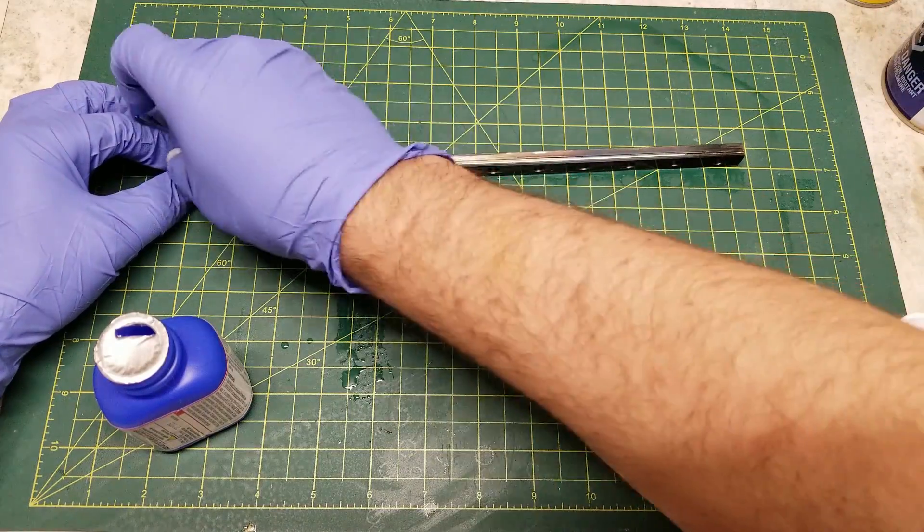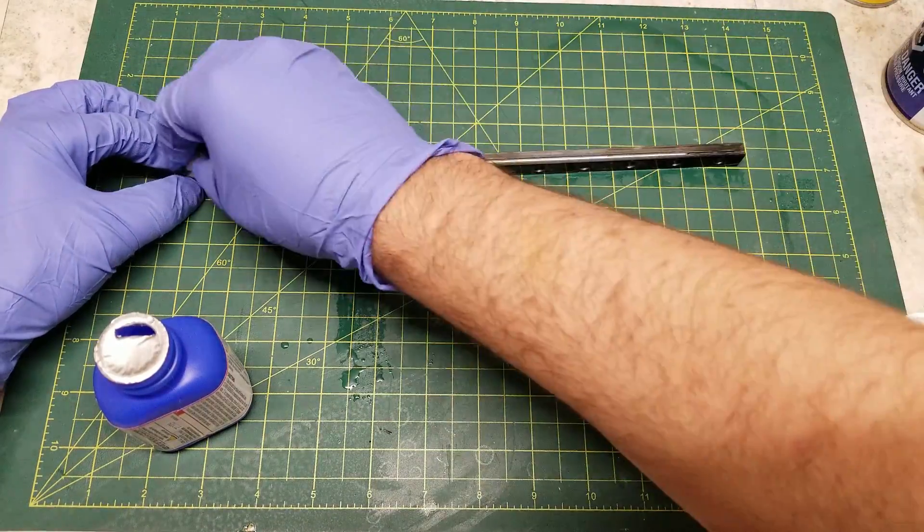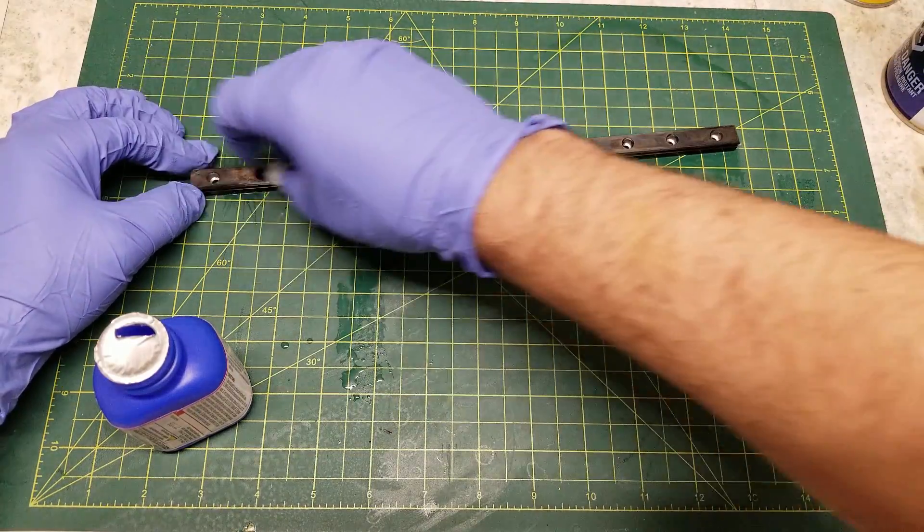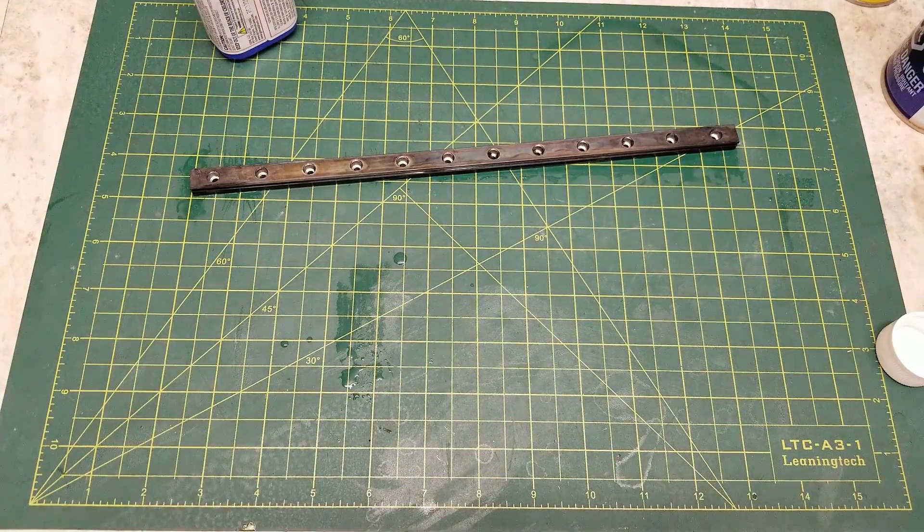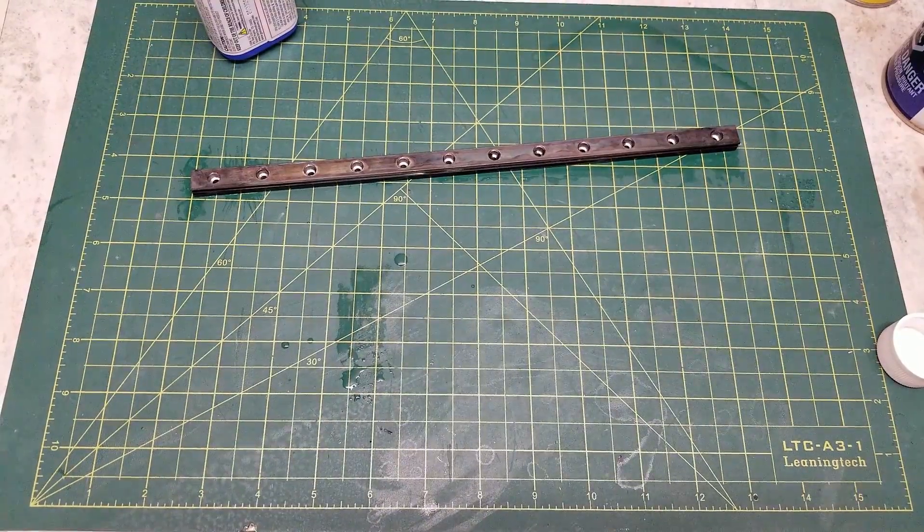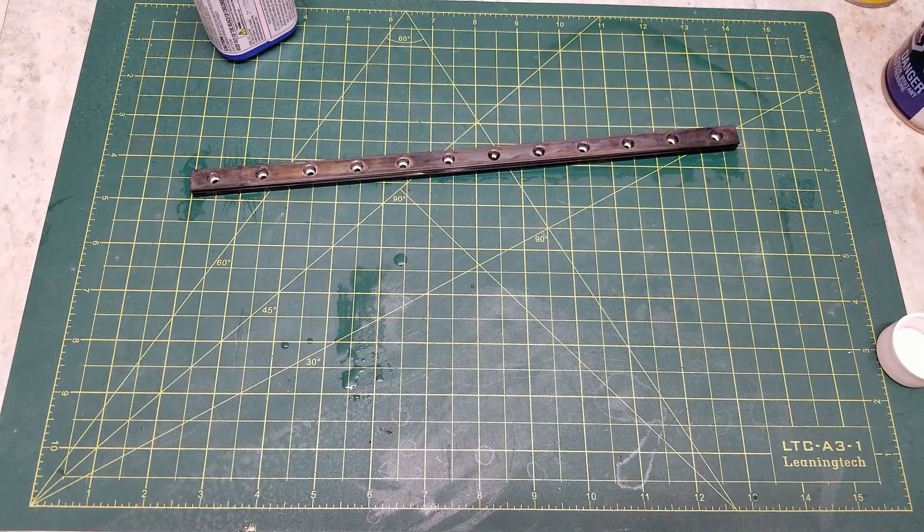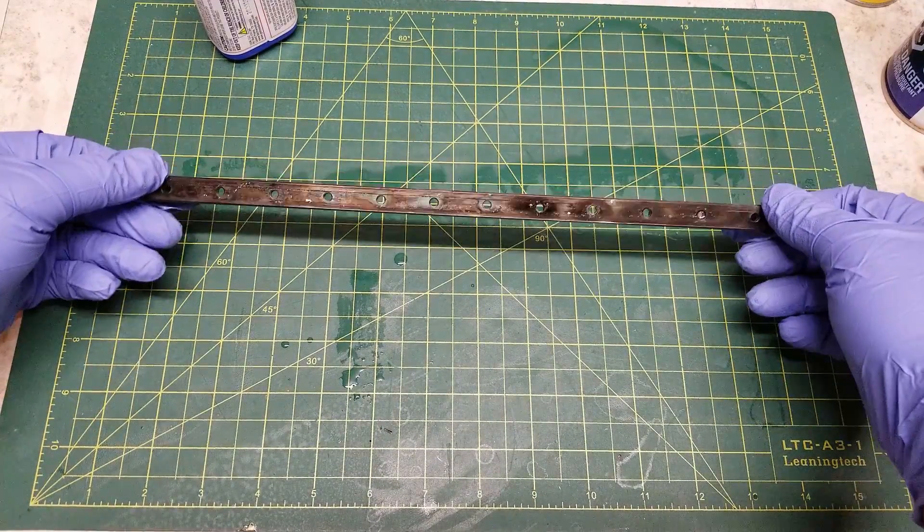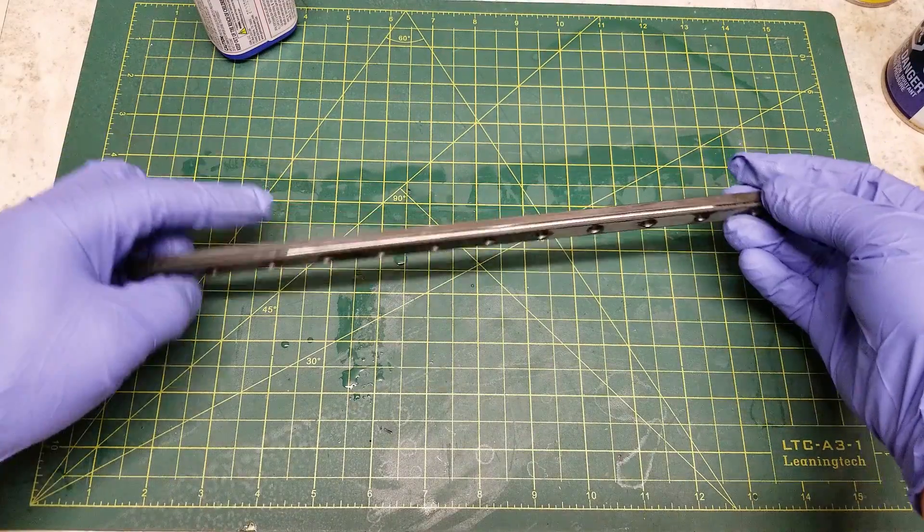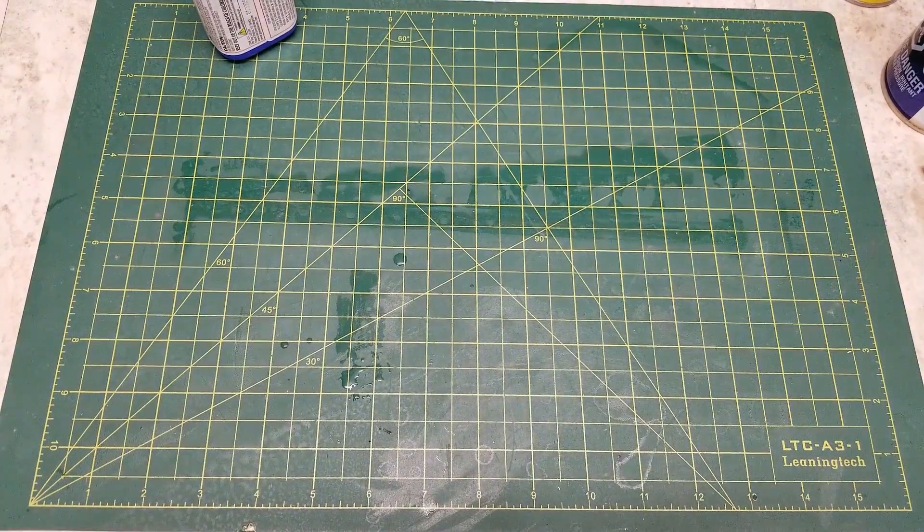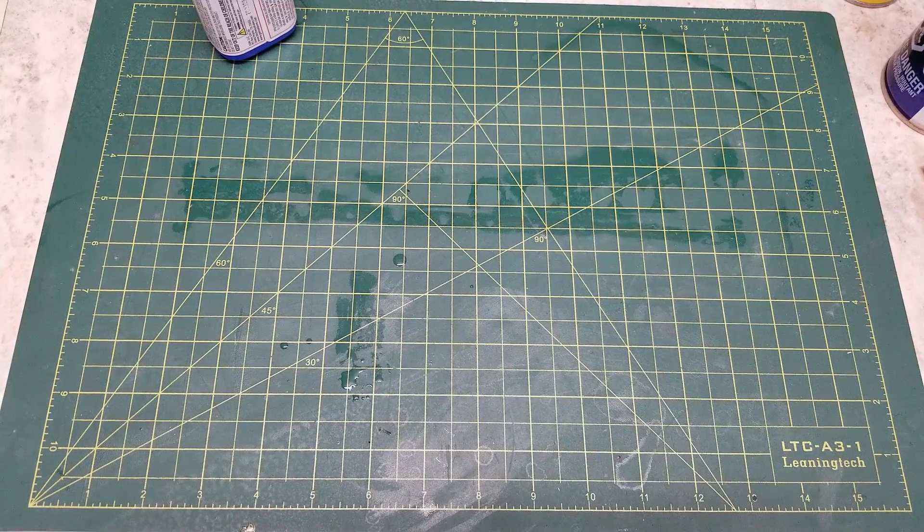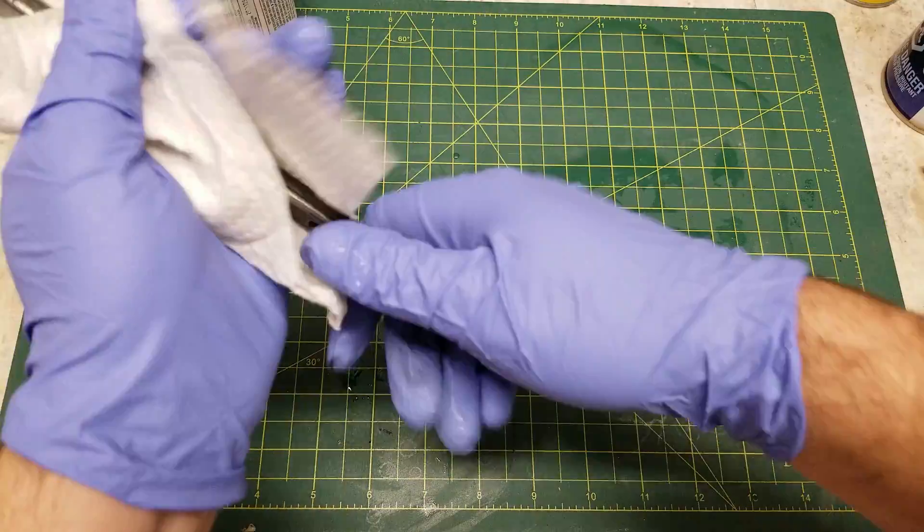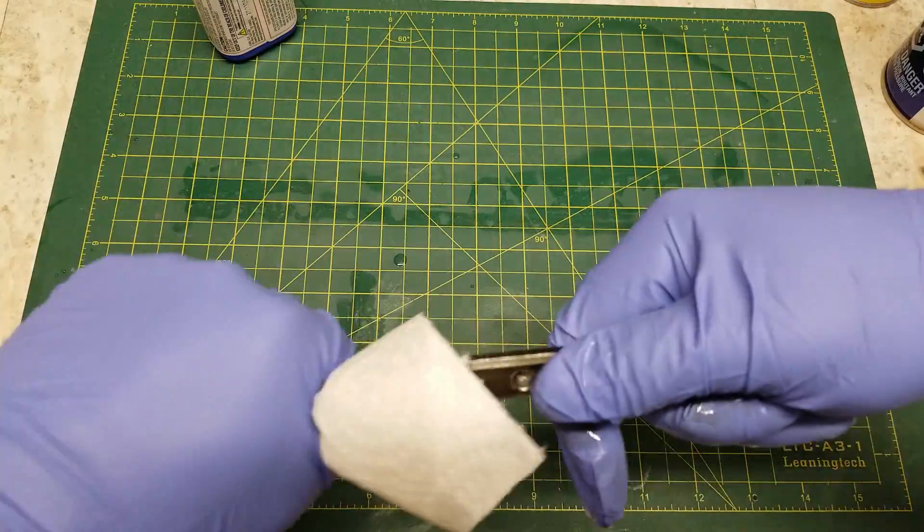And once all surfaces of the rail are blued you're going to want to let this sit for about a minute. And then afterwards you are going to want to take the rail and rinse it in cool running water. Now this stops the reaction and removes any excess bluing liquid.